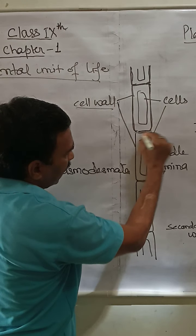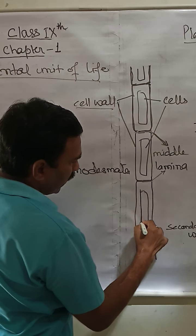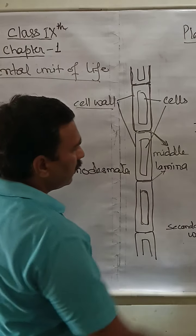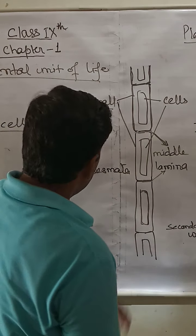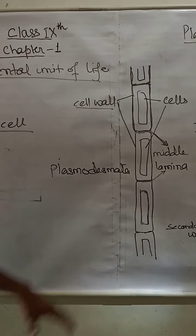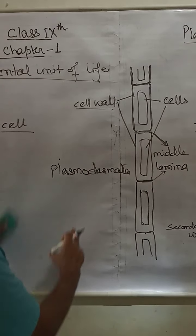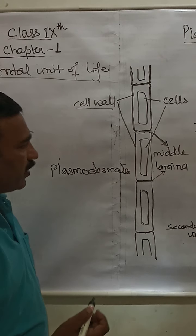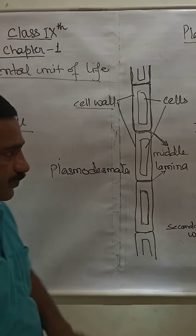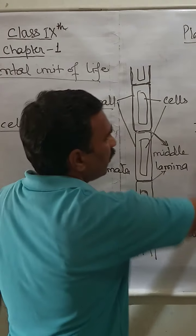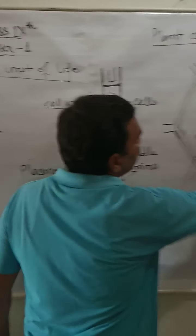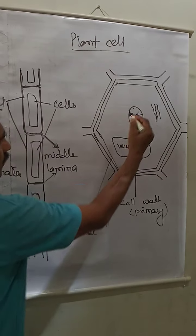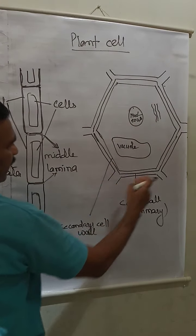The arrangement of one cell longitudinally connected to another — this cell, then another cell, then a third, and likewise — this arrangement is called Plasmodesmata. The material which keeps the two cells together, the cementing material between two cells, is called the middle lamella. The cell wall is made up of cellulose, which is a long chain of glucose. Now we will move to the structure of a single cell.